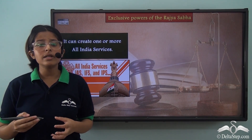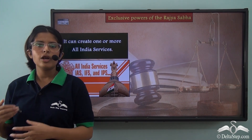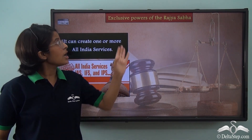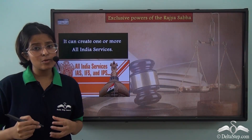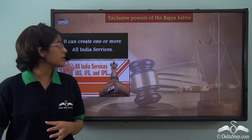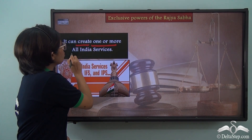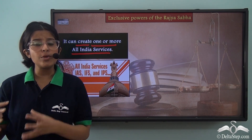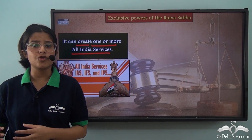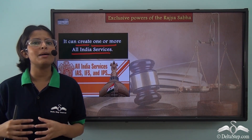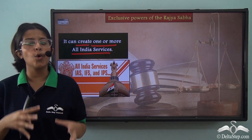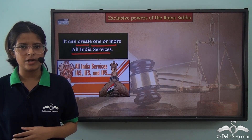Now we have understood the special powers of the Lok Sabha. The first exclusive power of the Rajya Sabha is that, in the national interest, it can create one or more All India services for the Union and the States. To do this, the Rajya Sabha has to pass a resolution with a two-thirds majority of its members, and then it can create those All India services for the whole country in the national interest.